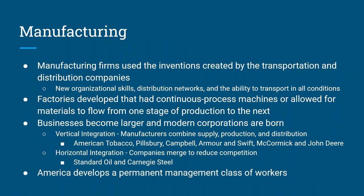Manufacturing firms become really big after the Civil War. These organizational skills, distribution networks, and the railroad's ability to transport goods at all hours and in all weather really kick-start manufacturing. Factories develop that work constantly day in and day out, with continuous process machines where raw materials come in one end of the building and finished products come out the other. A modern-day example of continuous process machinery is car manufacturing.